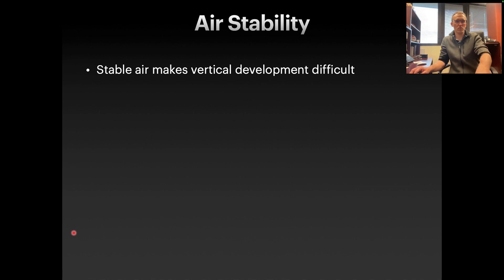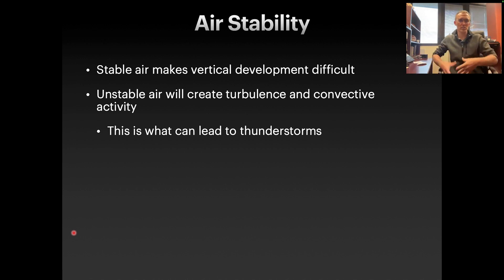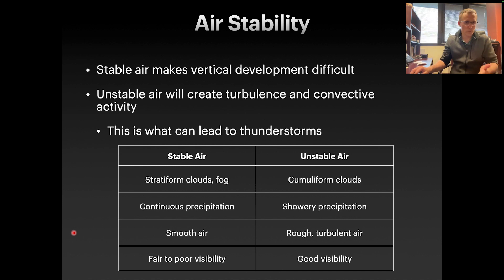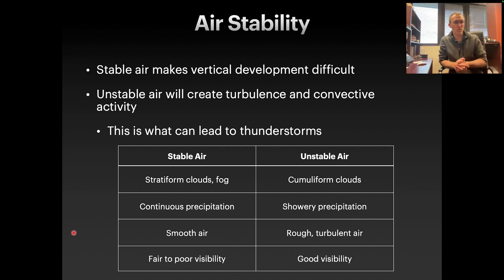Stable air makes vertical development difficult. With cool, dry air, you won't release energy from condensation because there's no moisture to condense. Stable air is characterized by stratiform layered clouds, continuous precipitation — a rain-all-day kind of characteristic — smooth air with no vertical motion, and fair to poor visibility. Poor visibility can result from fog, which forms when there isn't much air movement, combined with cloudy skies and rain.